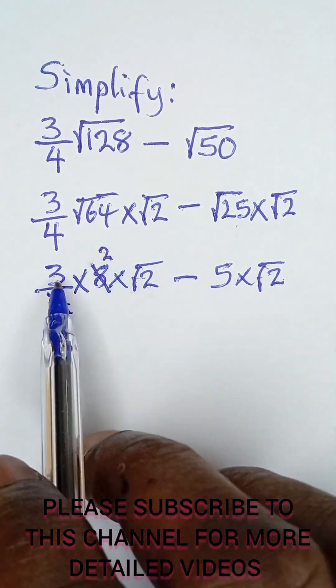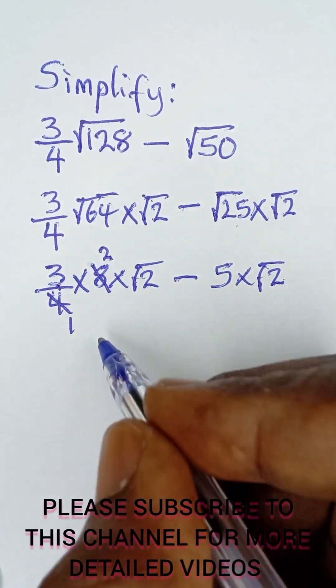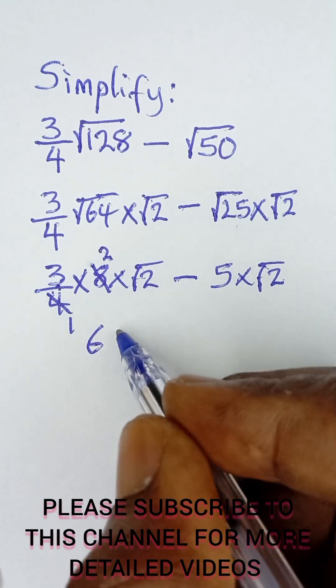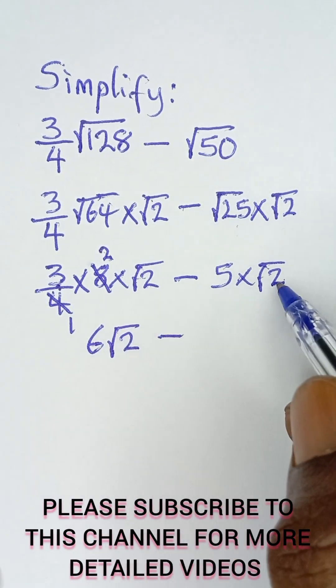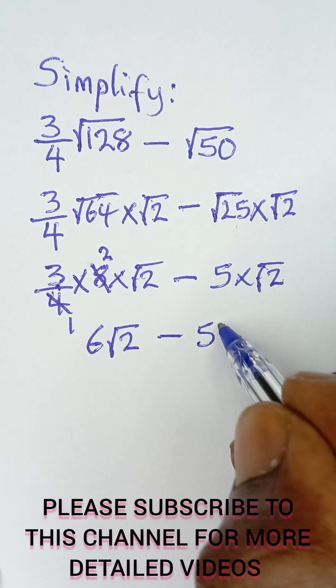These whole numbers can multiply. 3 times 2 is 6. So I have 6 multiplied by root 2, which is 6 root 2, minus 5 multiplied by root 2, which is 5 root 2.